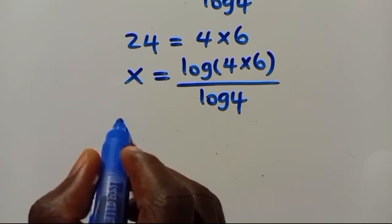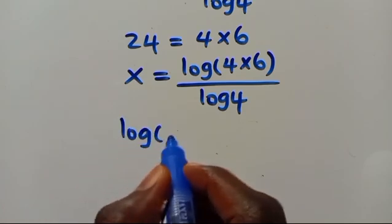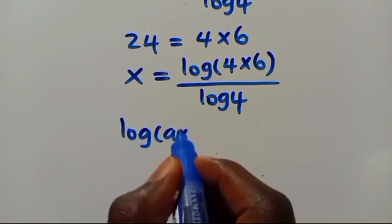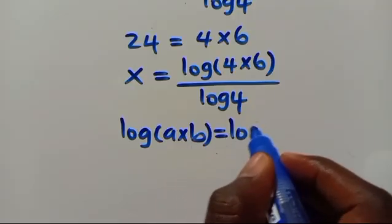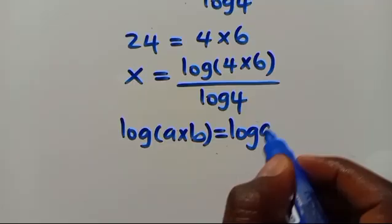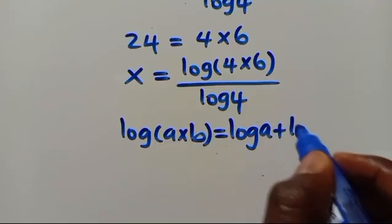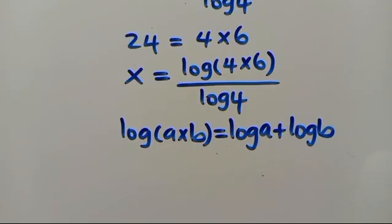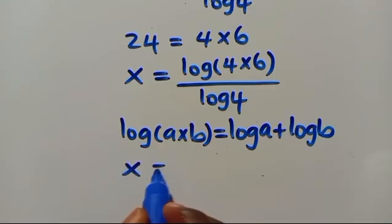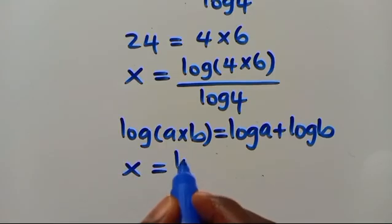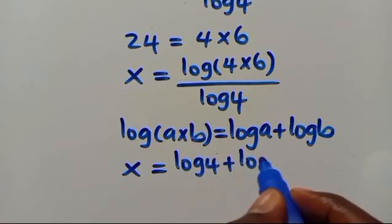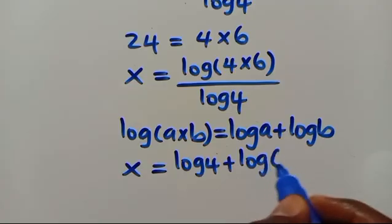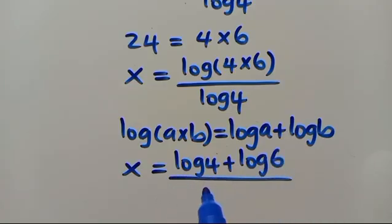Recalling the product rule: log(a times b) equals log a plus log b. So we have x equals (log 4 plus log 6) over log 4.